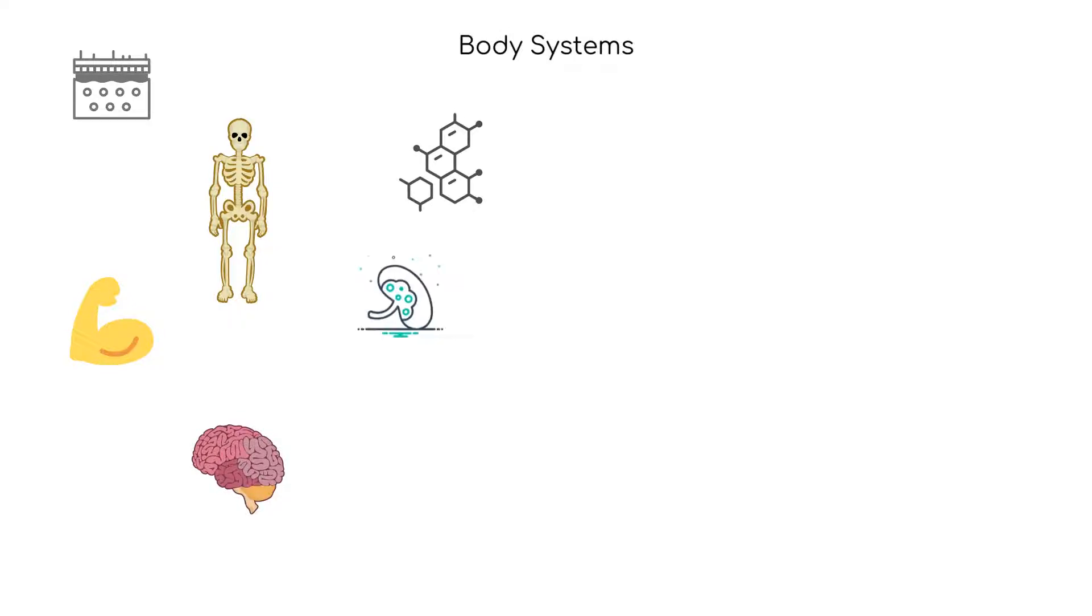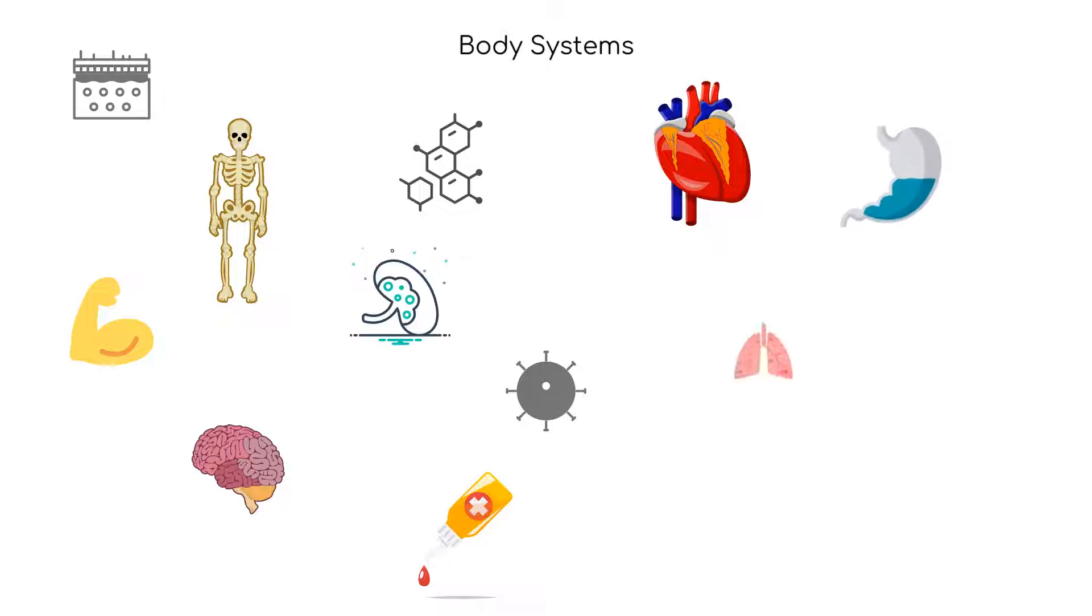The body systems include the integumentary, skeletal, muscular, nervous, endocrine, lymphatic, immune, blood, cardiovascular, digestive, respiratory, urinary, and reproductive.